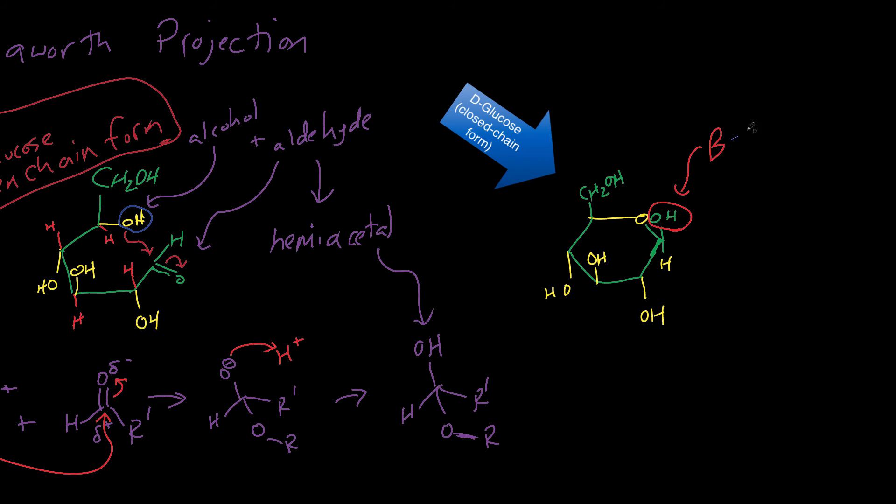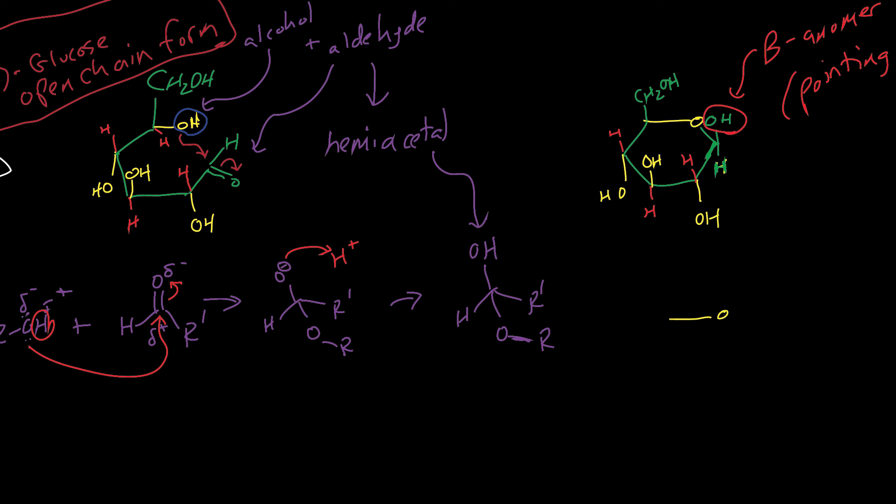If the OH is written up, that's the beta-anomer, which is just a type of isomer. Beta-anomer is when the OH is pointing up. You can also have the alpha-anomer, which is pointing down. That hemiacetal group can form two different ways - you can have the OH group pointing up or the OH group pointing down. The other OHs I'm just drawing the exact same way as I drew before in the Haworth projection.